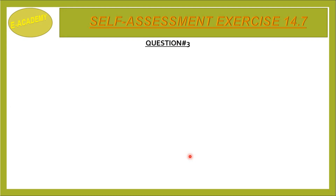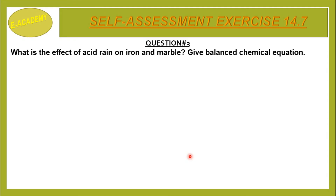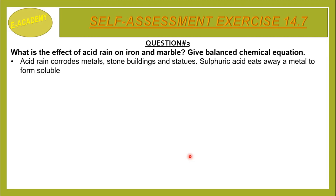Question Number 3: What is the effect of acid rain on iron and marble? Give balanced chemical equations. Acid rain corrodes metals, stone buildings and statues. Sulfuric acid eats away metal to form soluble salts and hydrogen.